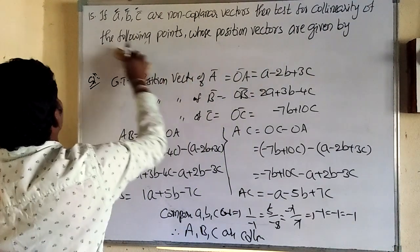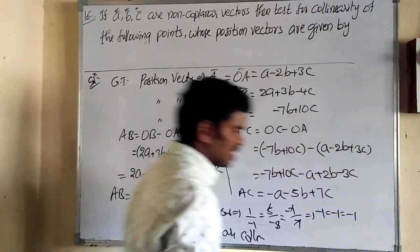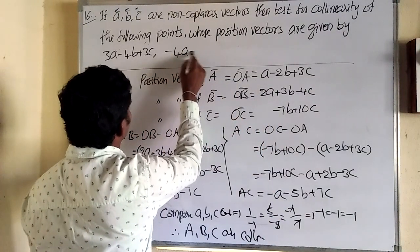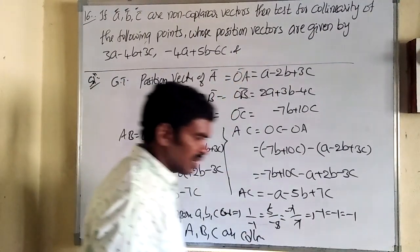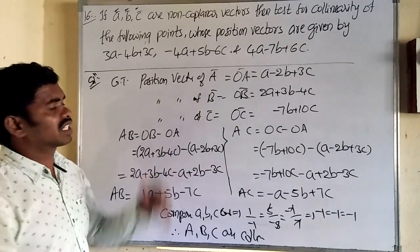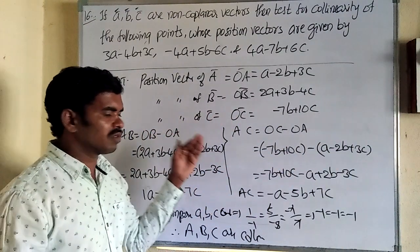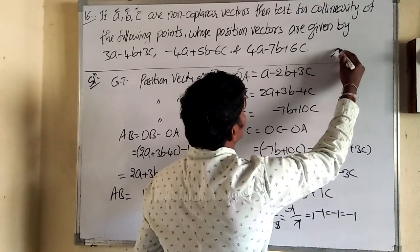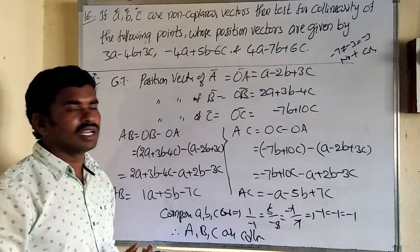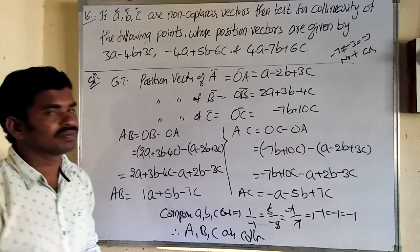Question 16 (homework): Test collinearity for points with position vectors 3a − 4b + 3c, −4a + 5b − 6c, and 4a − 7b + 6c. Follow the same process. You will get coefficients −7, −3, −3 which are not all equal, so the points are not collinear.